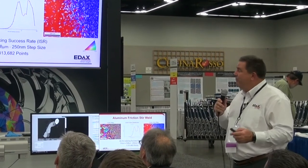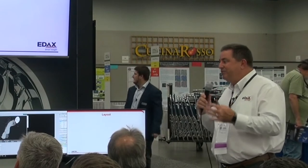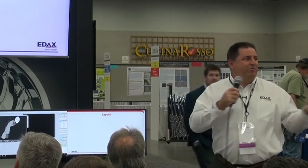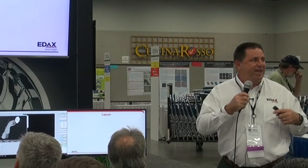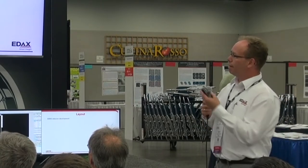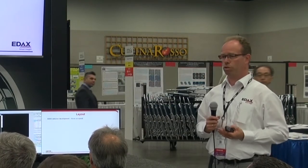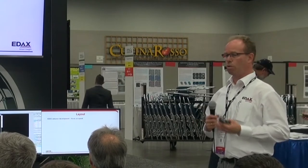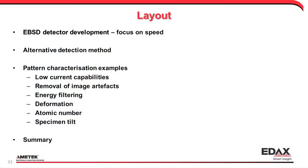That covers the evolution — how EBSD detector technology has progressed from CCD to CMOS. Rene will now take over to cover the next step in pattern development. Thank you, Matt. The EBSD detector development over the last 30 years has really been focused on speed and usability — improving detector speed to allow faster acquisition and more efficient use of EBSD and SEM time. Now there are alternative detection methods I'm going to talk about: direct electron detection.